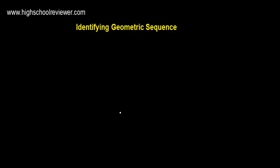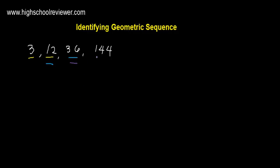Let's have another example. We have here a set of numbers: 3, 12, 36, and 144. Let's identify if this set is a geometric sequence. First, we have to look at two succeeding numbers: we have 3 and 12, then 12 and 36, and lastly 36 and 144.